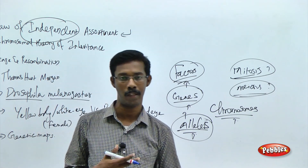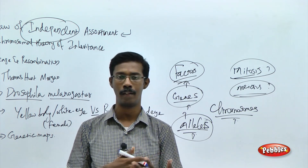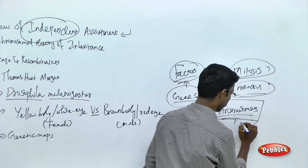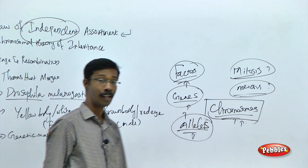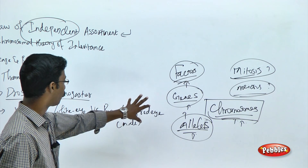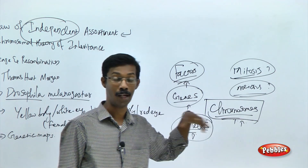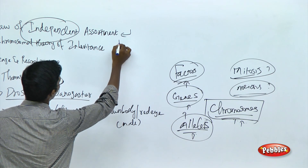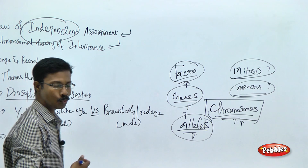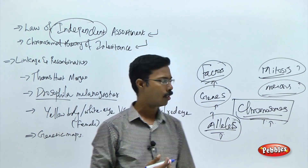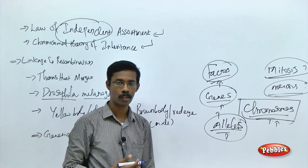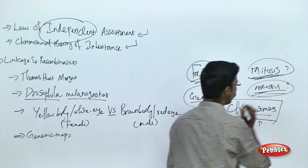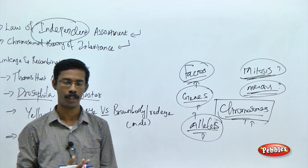What are alleles? Alleles are the other forms of a particular gene. As we all know, characters are inherited by DNA in the form of genes located on chromosomes. After the discovery of chromosomes, scientists confirmed the law of independent assortment and somewhat modified it to the chromosomal theory of inheritance. During mitosis and meiosis, you should have studied phases like prophase, anaphase, metaphase, and telophase.